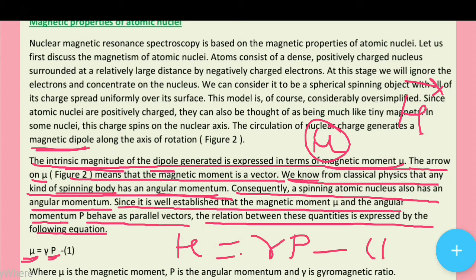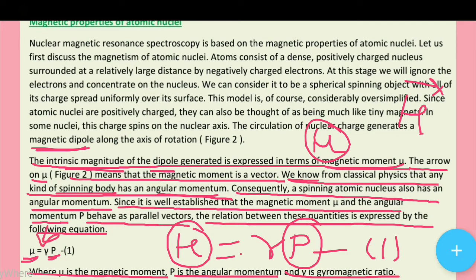The relation is: mu is equal to gamma times p — equation number one. Where mu is the magnetic moment, p is the angular momentum, and gamma is the gyromagnetic ratio. Yeh hi relation hai magnetic moment aur angular momentum ka.